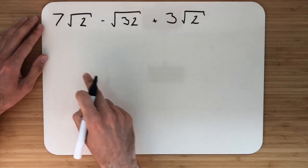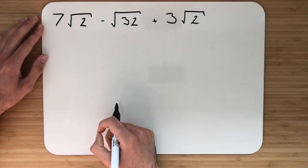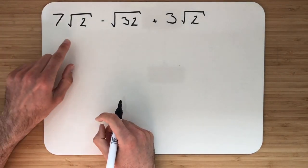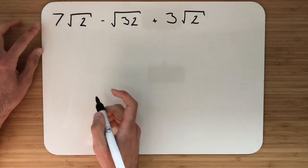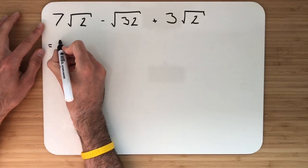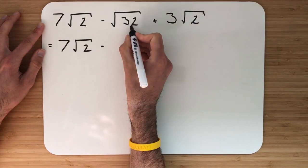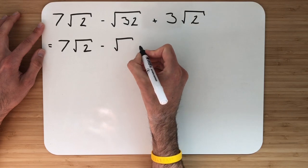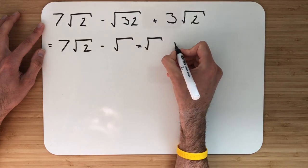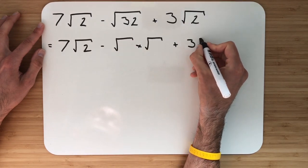In example 3, again we're looking to simplify this full calculation down. Clue is in the question. These root 2's are going to help us out folks. So we have 7√2, subtract. We're looking to simplify this down, so let's just put our root symbols. And then I'll just keep my add 3√2 here.